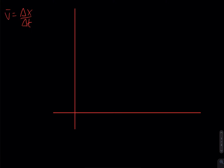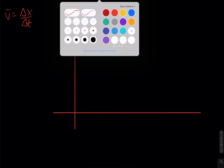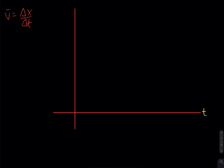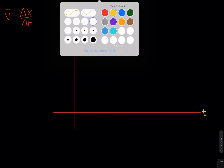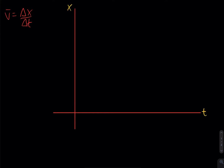So I have a position versus time graph here. The horizontal axis is time, and the vertical axis is position. What if my graph looks something like this — it's got a nice, smooth wave to it. This is not composed of straight line segments, so I don't have a constant velocity over any interval of time. My position is always changing at a different rate.